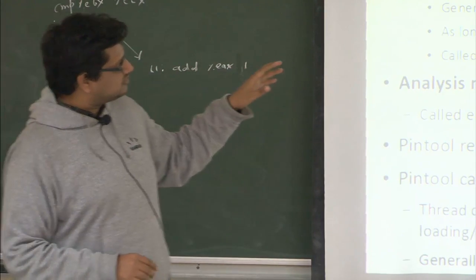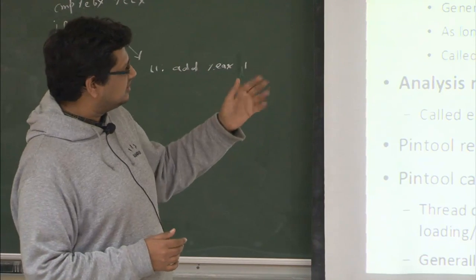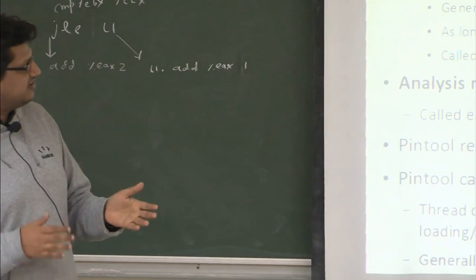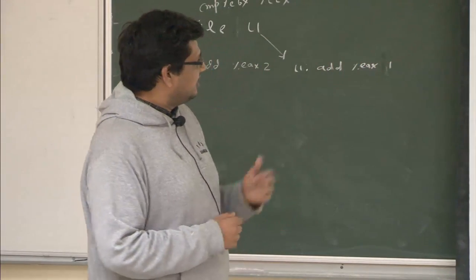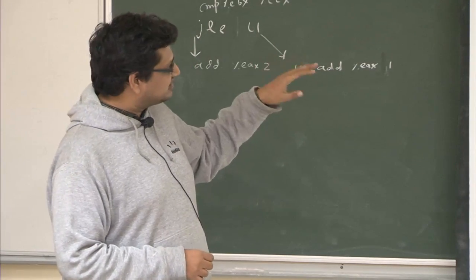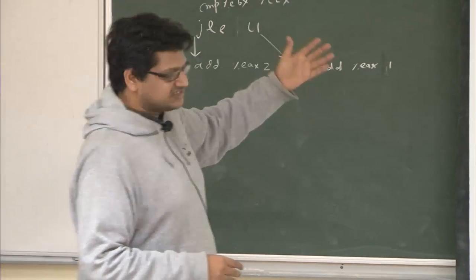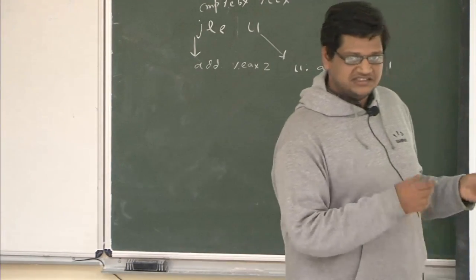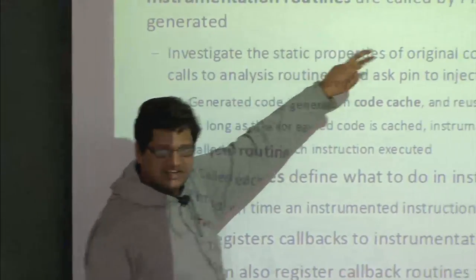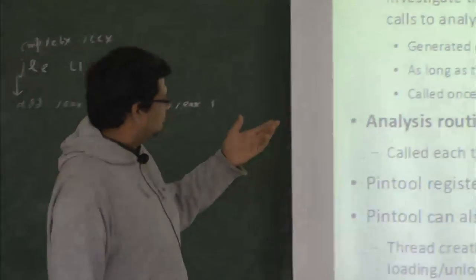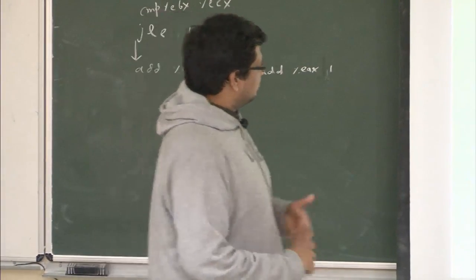A PIN tool consists of instrumentation and analysis routines, which are simply functions. Instrumentation routines are called by PIN whenever new code is about to be generated. The instrumentation routine investigates the static properties of the original code and decides if and where to inject calls to analysis routines. Once it decides to insert a call to an analysis routine, it asks PIN to do so, and the generated code is stored in a cache for reuse.